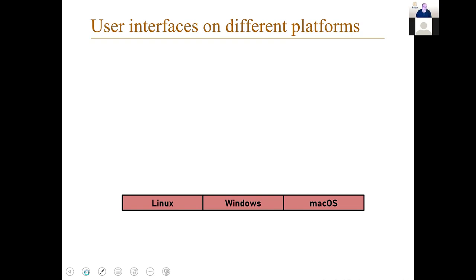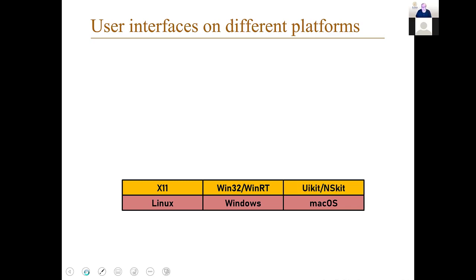That makes it hard to implement user interfaces, because on Linux you have to implement it in a toolkit called X11. On Windows, you have to use something called Win32 or WinRT. On Mac OS, you have something called UIKit or NSKit to implement the user interface.